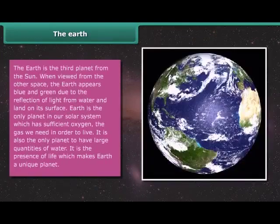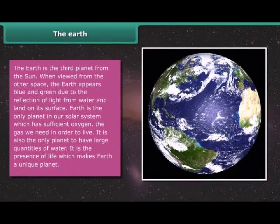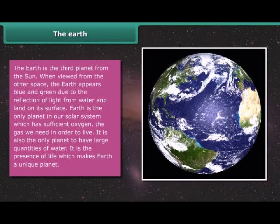The Earth is the third planet from the Sun. When viewed from outer space, the Earth appears blue and green due to the reflection of light from water and land on its surface. Earth is the only planet in our solar system which has sufficient oxygen, the gas we need in order to live. It is also the only planet to have large quantities of water. It is the presence of life which makes Earth a unique planet.